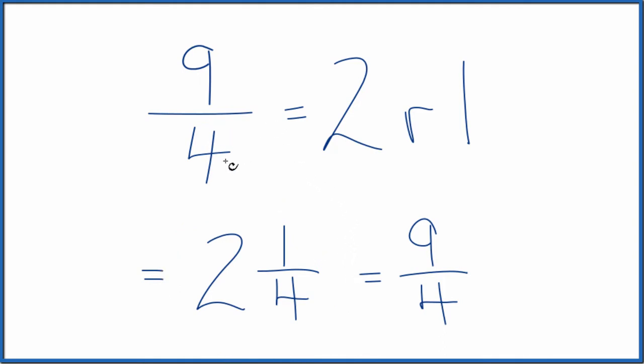So to recap, we divided nine by four. We ended up with two. That's a whole number with a remainder of one. That's the numerator. The denominator is going to be the original denominator in our fraction.